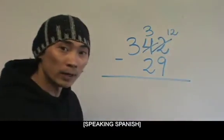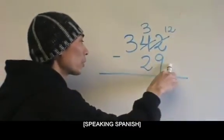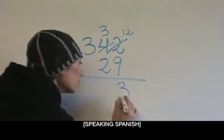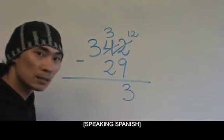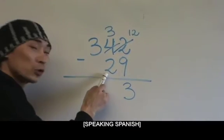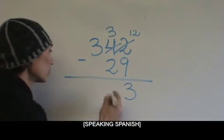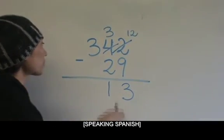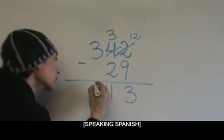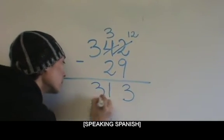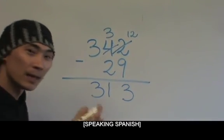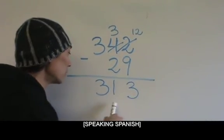Ahora, 12 menos 9 igual 3. 3 menos 2, 1. Y 3, obviamente, tenemos aquí el resultado, que es 313.